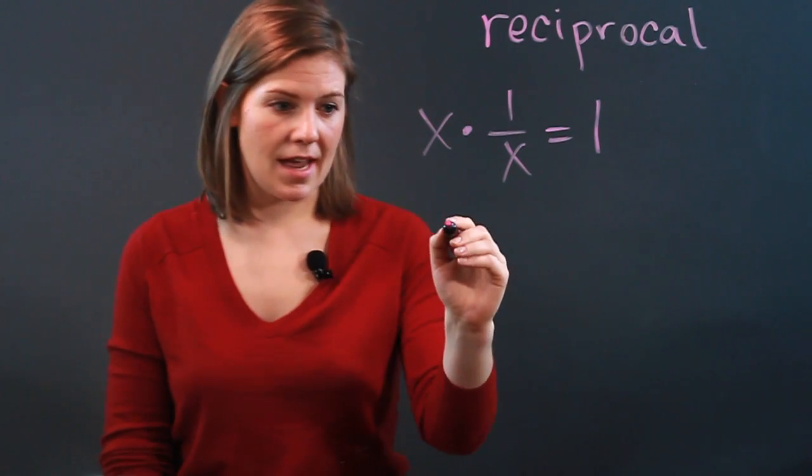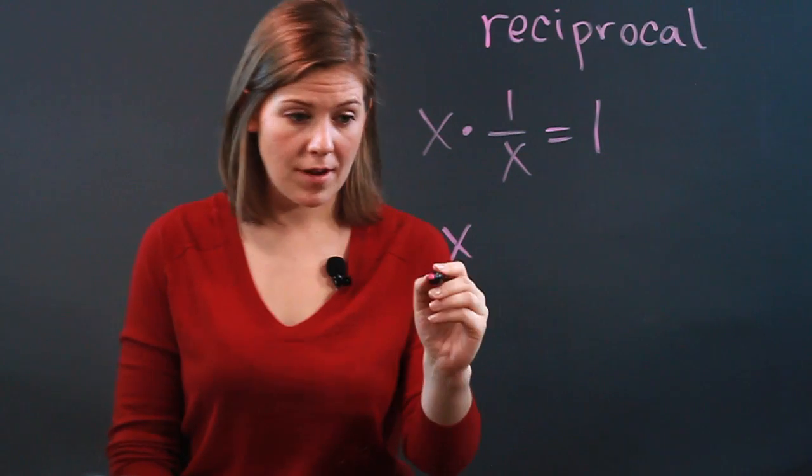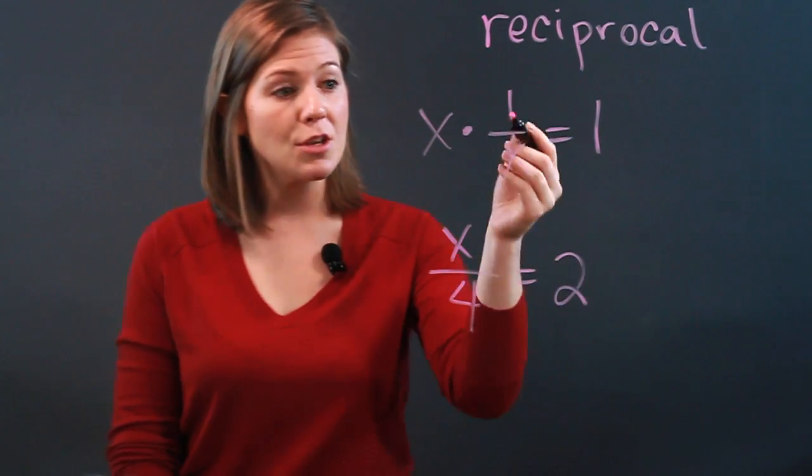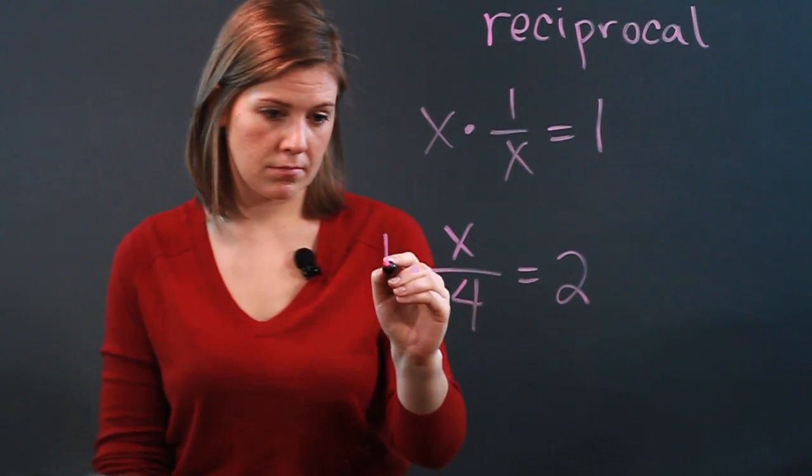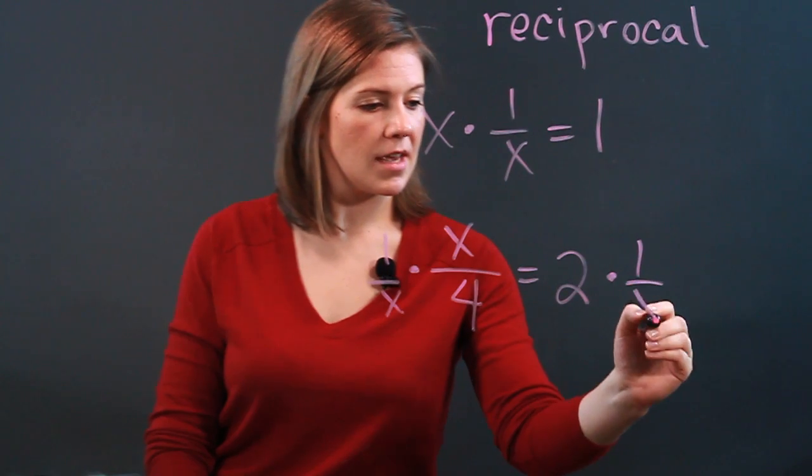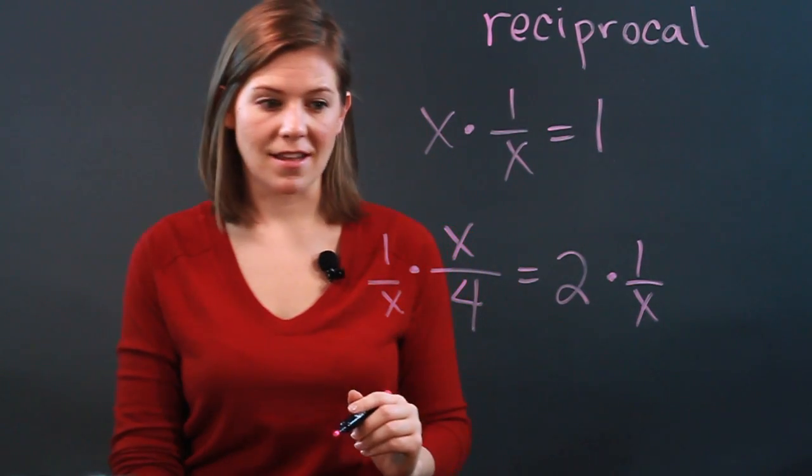So if you were to have, say, x in the numerator of a fraction, x over 4 equals 2, we could use this reciprocal, 1 over x. And of course, if we multiply it on one side of the equation, we must make it equal by multiplying it on the other side of the equation.